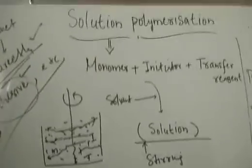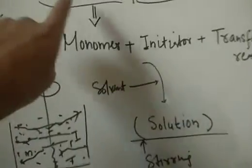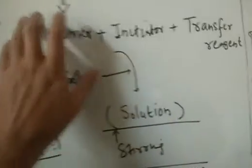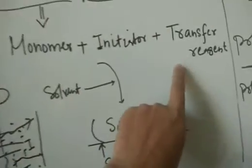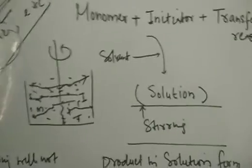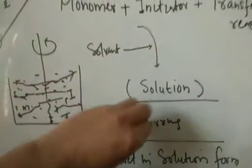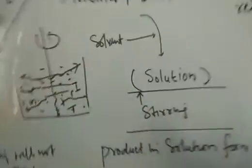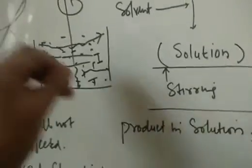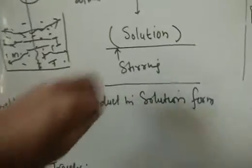To recap the basics of solution polymerization: as the name suggests, we do not get any solid mass as the product. We take the monomer plus initiator plus chain transfer agent, dissolve all three in a suitable solvent — organic or inorganic — and stir on a magnetic stirrer. The product remains in solution form, so we can use it directly for purposes like adhesives or coatings.